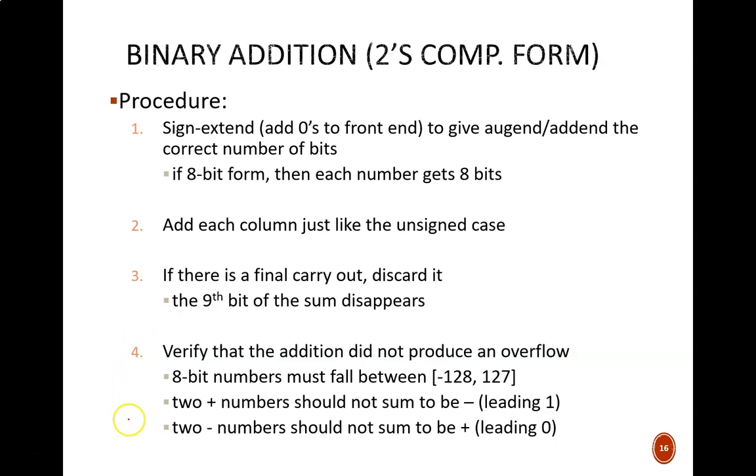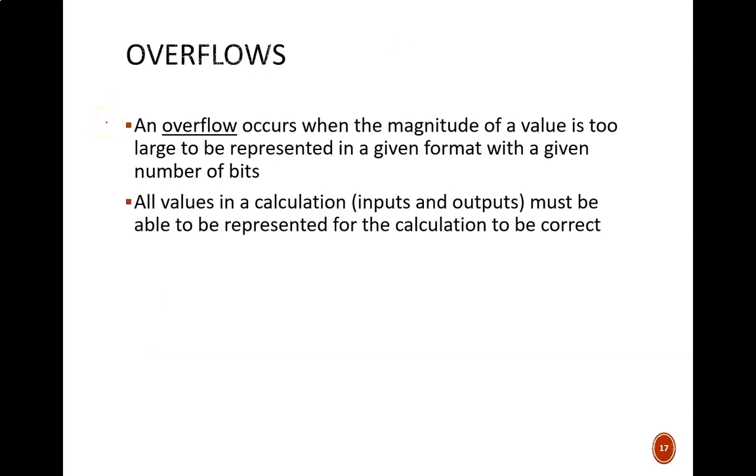Finally, we need to verify that we did not encounter an overflow. As we know, 8-bit 2's complement numbers can only fall in the range of negative 128 to positive 127. In general, an overflow will occur when the magnitude of a value is too large to be represented in a given format with a given number of bits. All values in a calculation, inputs and outputs, must be able to be represented for the calculation to be correct.